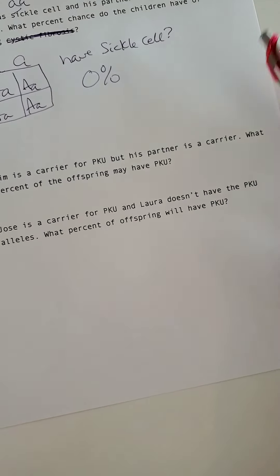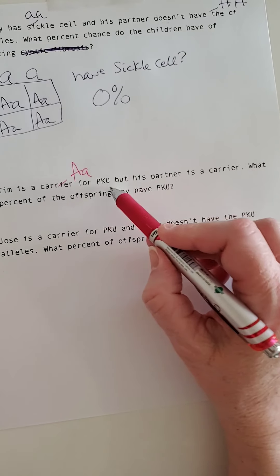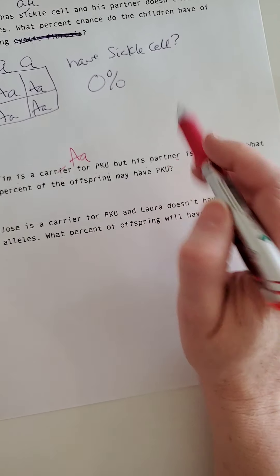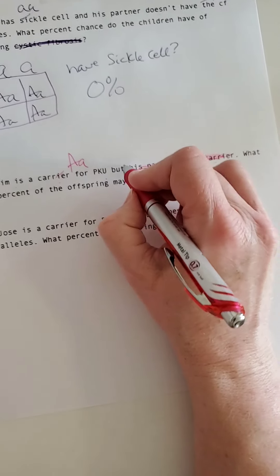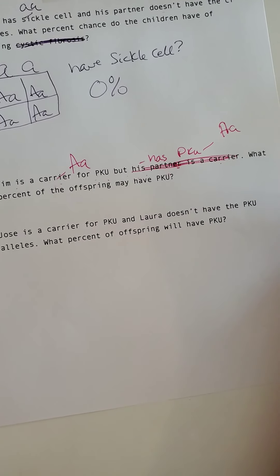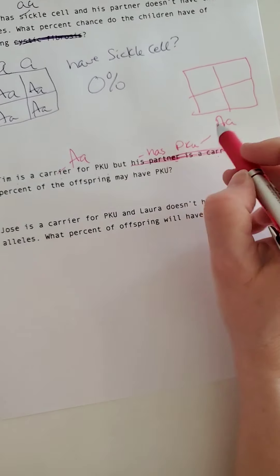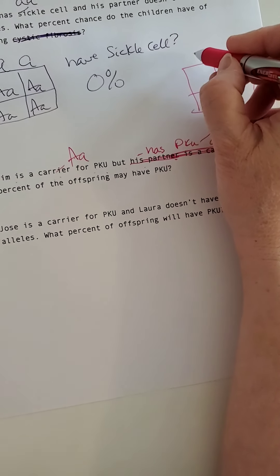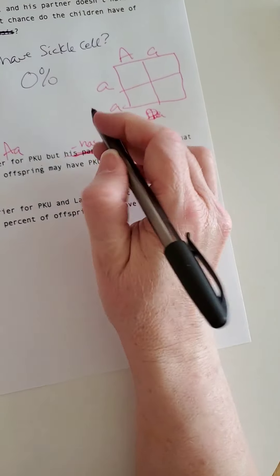Let's look at PKU. Tim is a carrier for PKU, so he is Aa — that's the genotype of a carrier, a heterozygote. His partner has PKU, so his partner is aa. So Tim is Aa and his partner is aa.